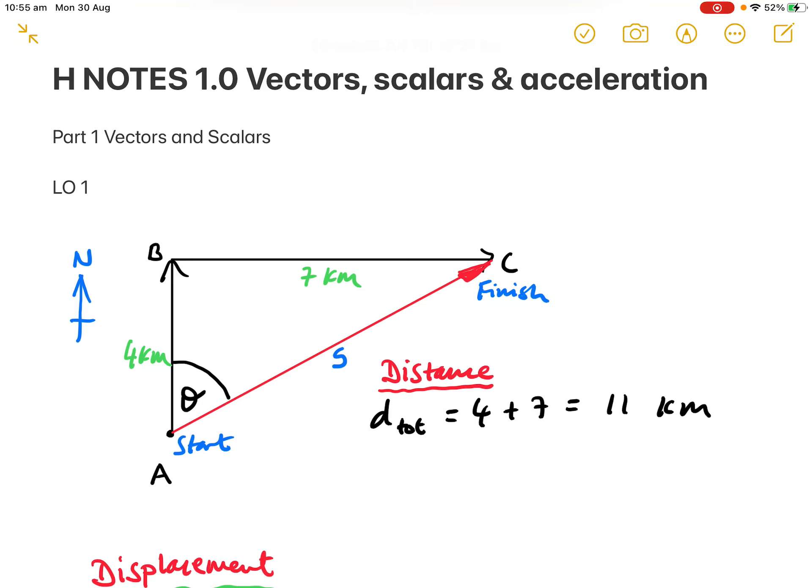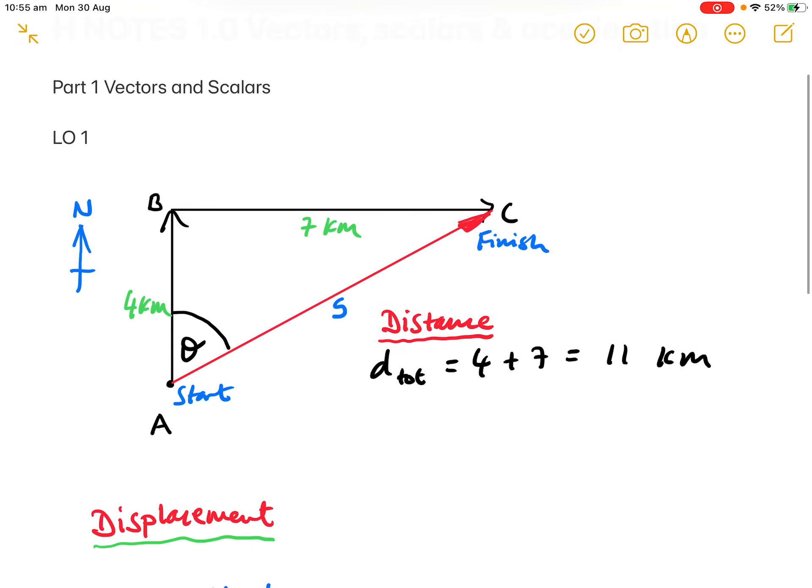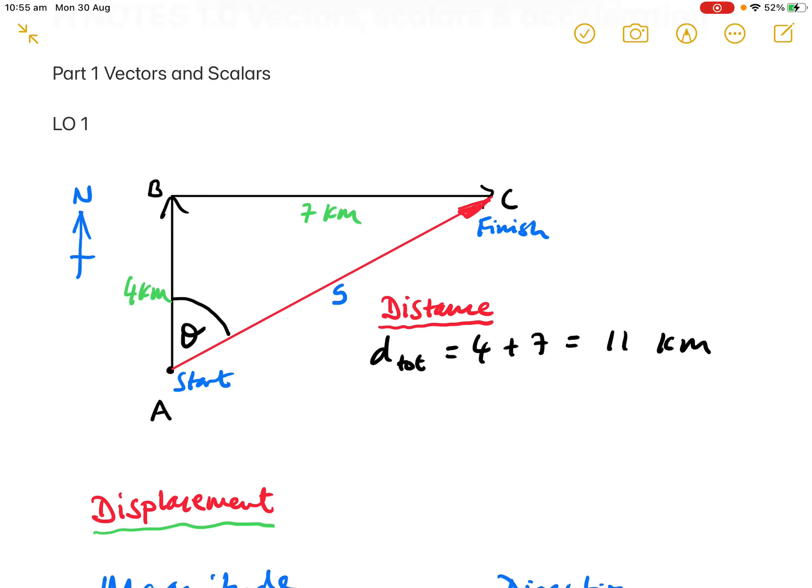This note is Part 1 and focuses on vectors and scalars. The numbers on the left-hand side represent the learning outcome numbers, and you can cross-reference these with your PDF course booklets. We're going to begin by looking at the distinction between distance and displacement.